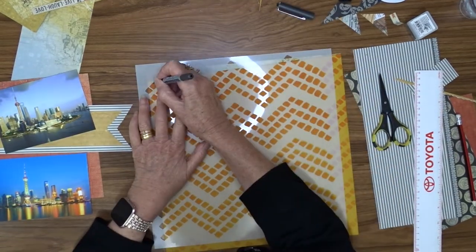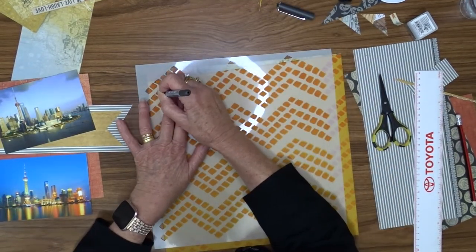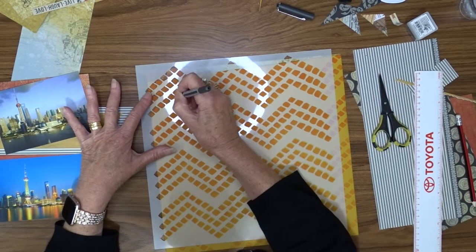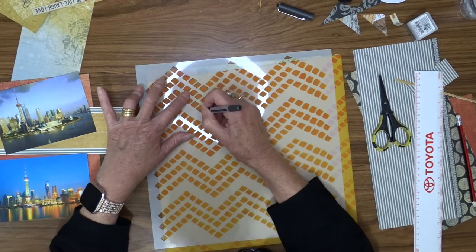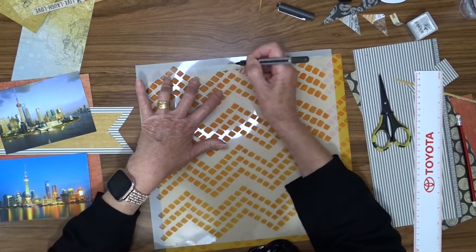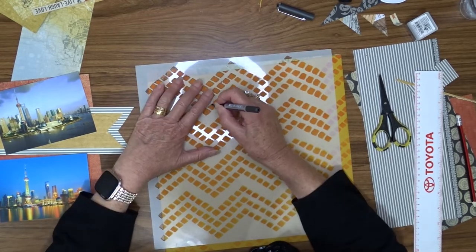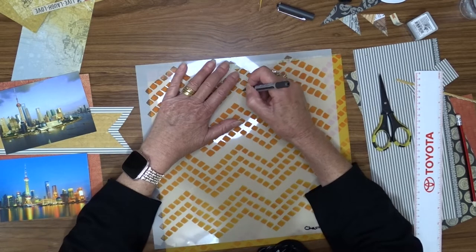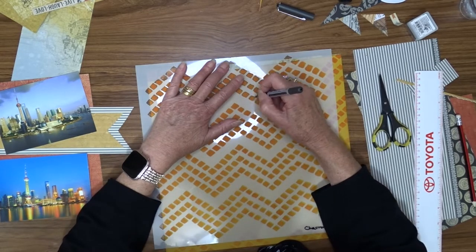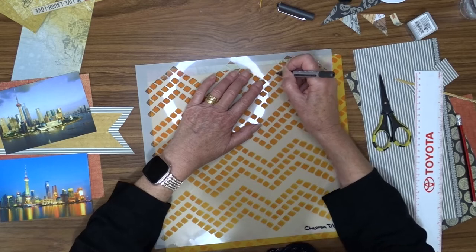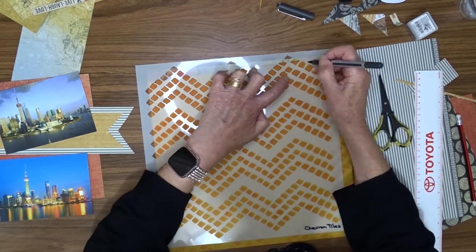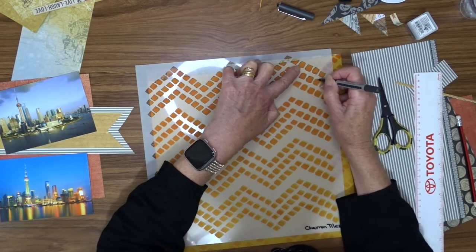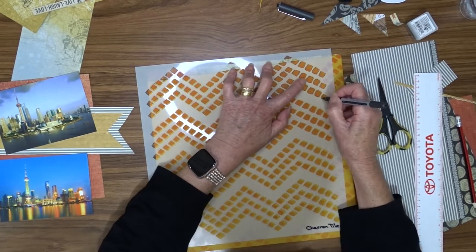The background was looking too wishy-washy to me, so I decided to take my stencil, lay it back over the inking that I had done, and use a fine black pen to draw around the stencil holes. I'm going to do this for the whole page. I'm not going to make you watch the whole thing—I'll fast forward a little bit and then I'll come back to you when it's finished.